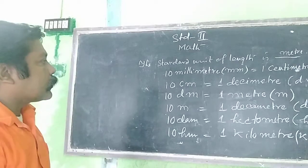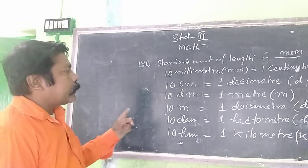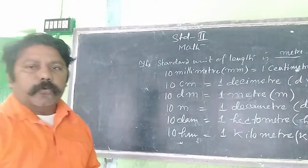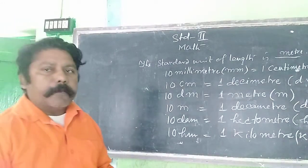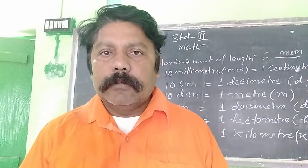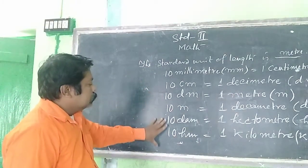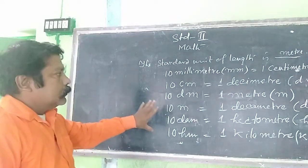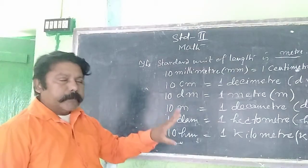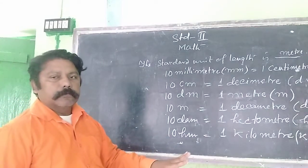Ten centimeters equals one decimeter, ten decimeters equals one meter, ten meters equals one decameter, ten decameters equals one hectometer, ten hectometers equals one kilometer. According to order, we remember this table: millimeter, centimeter, decimeter, meter, decameter, hectometer, kilometer.